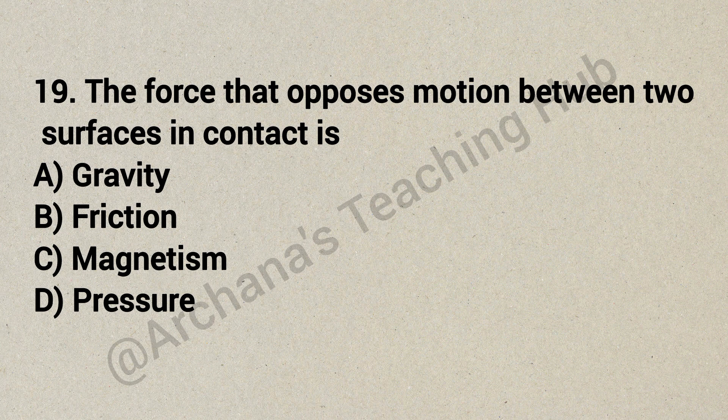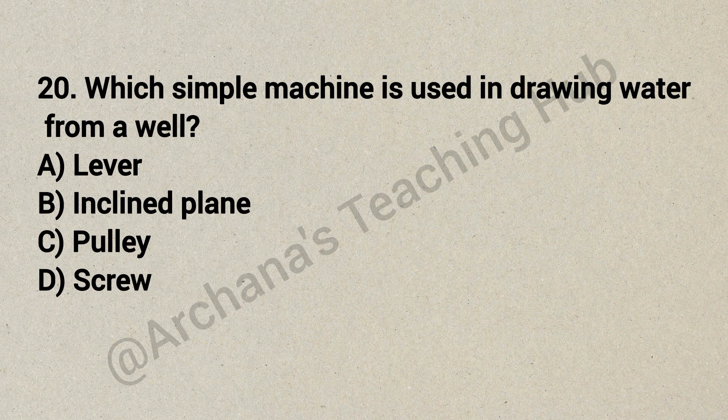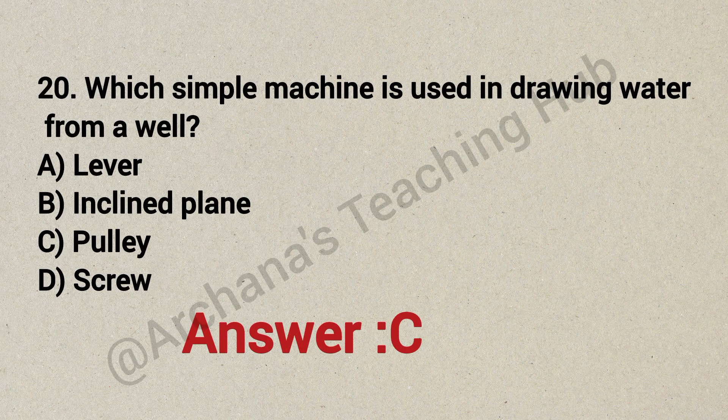Question 19: The force that opposes motion between two surfaces in contact is — Option A: gravity, Option B: friction, Option C: magnetism, Option D: pressure. Correct answer is Option B: friction. Question 20: Which simple machine is used in drawing water from a well? Option A: lever, Option B: inclined plane, Option C: pulley, Option D: screw. Correct answer is Option C: pulley.